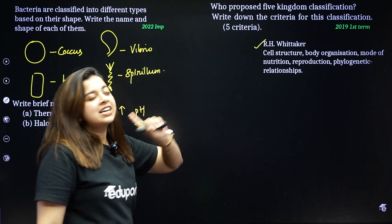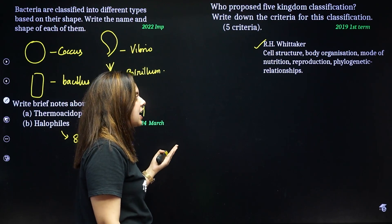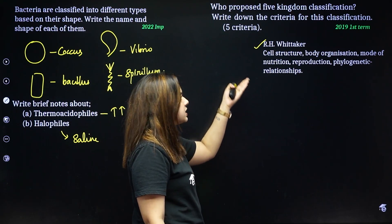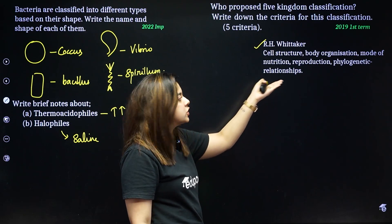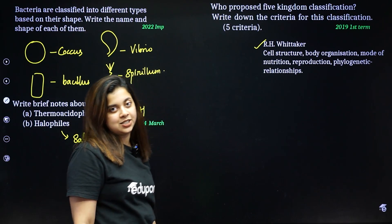Write down the five criteria for classification used by R.H. Whittaker. The five criteria are: cell structure, body organization, mode of nutrition, reproduction, and phylogenetic relationships.